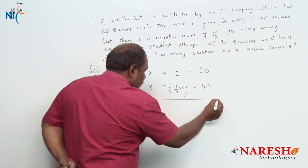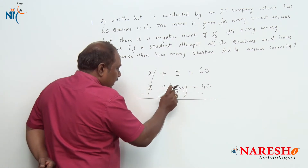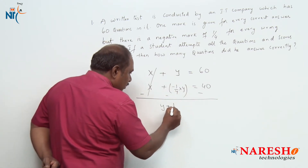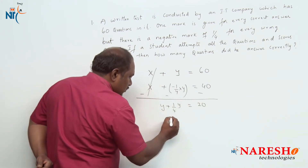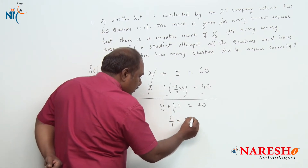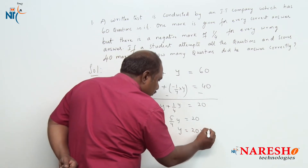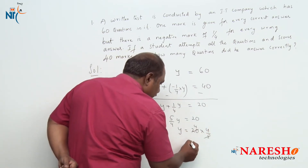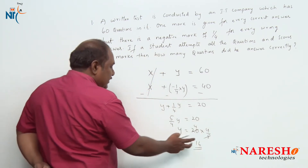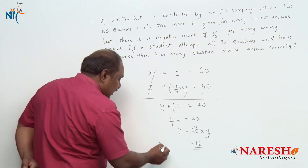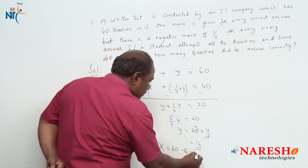Solving this, I subtract the two equations. x and x get cancelled, and y plus 1/4 of y should be equal to 20. So 5/4 times y equals 20, which gives y equal to 20 times 4/5, which is 16. So the number of questions he answered wrongly is 16, and the number he answered correctly is x = 60 minus 16, which is 44.